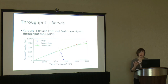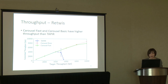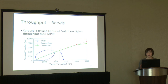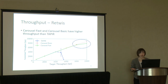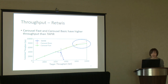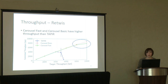We also evaluated throughput using the Retweets workload. The x-axis is target throughput and the y-axis is committed throughput. Ideally, committed throughput should be close to target throughput if the system can handle the load. When target throughput is low, all systems meet the target. Over 5,000 transactions per second, Taper's throughput starts to drop significantly due to queuing on the Taper server increasing the abort rate. Over 8,000 transactions per second, Carousel Fast has lower throughput than Carousel Basic because it does more work, needing to perform both slow and faster paths simultaneously. Overall, Carousel maintains high throughput while ensuring low latency.